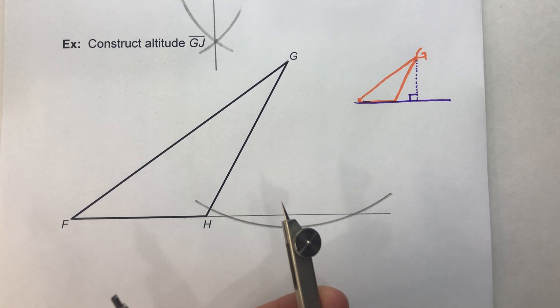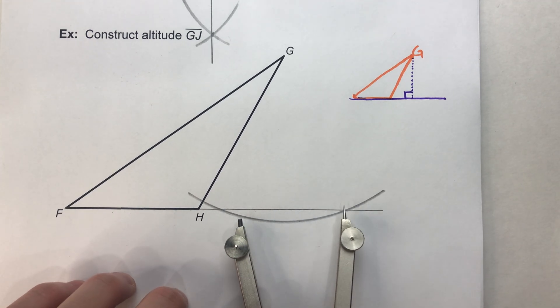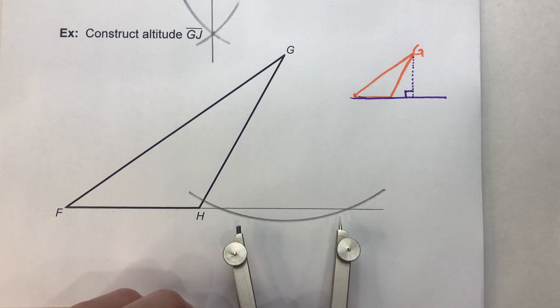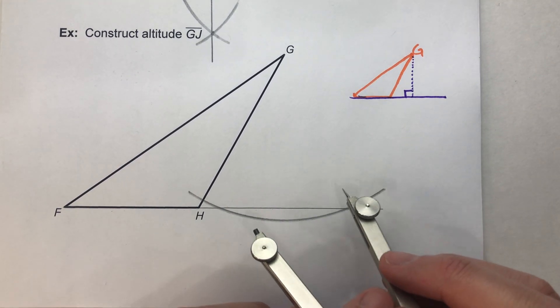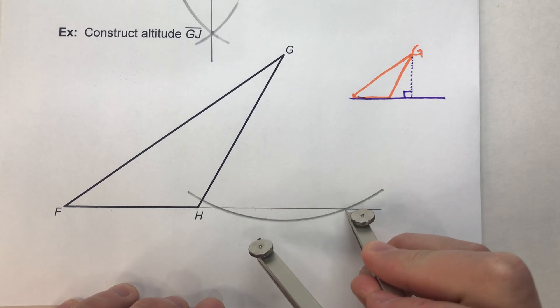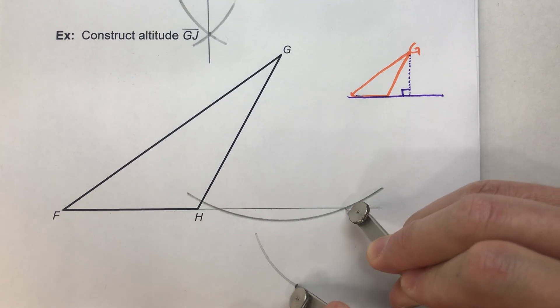Now we need to find another point to draw our altitude through. So compass setting more than half the distance from where the arcs hit the line. And I'm going to swing an arc from one side.